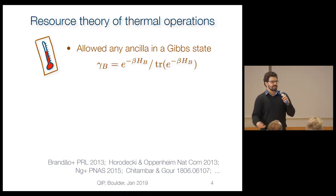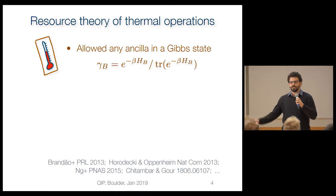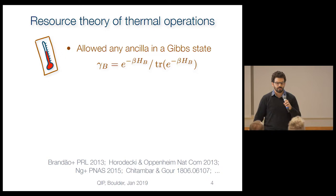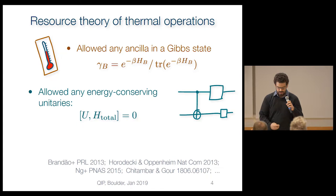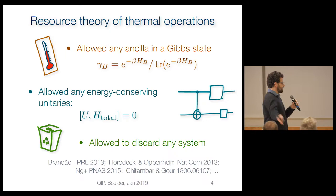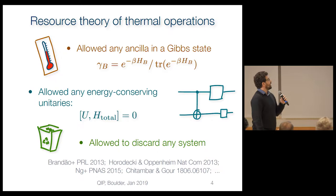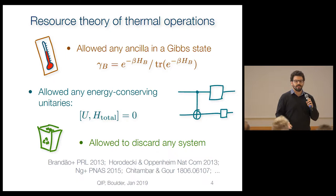The resource theory of thermal operations goes like this. First, we're allowed to bring in any ancilla that's in the thermal state. Second, we're allowed to do any unitary that commutes with the total Hamiltonian — any unitary that conserves energy, which is what we expect from physics. Last, we're allowed to trace out any system we're done using. Now, if you stare at these operations, you can try to figure out mathematical characterizations — interesting notions like thermomajorization and so on.